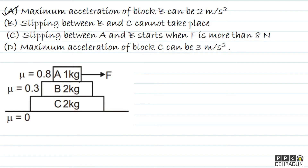Now let's check option B: slipping between B and C cannot take place. As F increased, friction between A and B also increased. Even when maximum friction from A acts on B (8 N), we saw that B and C do not slip relative to each other — they move together at 2 m/s². So option B is also correct: slipping between B and C cannot take place.